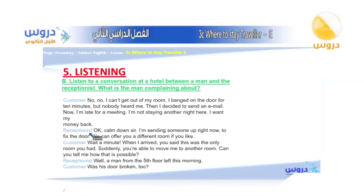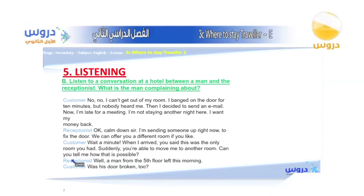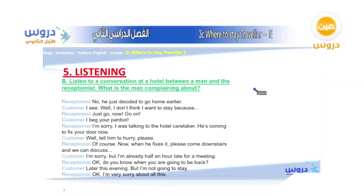The receptionist says: 'Calm down sir, I'm sending someone up right now to fix the door. We can offer you a different room.' The man responds: 'When I arrived you said this was the only room. Can you tell me how that is possible?' The receptionist explains a guest on the fifth floor left this morning. The man asks if his door was broken too — no, he just decided to go home earlier.